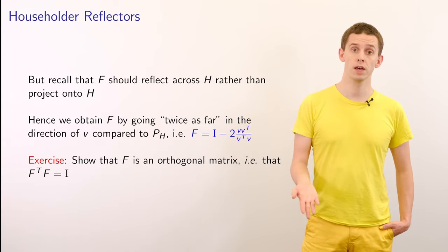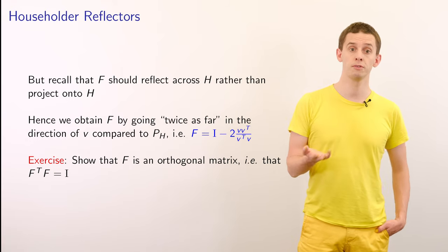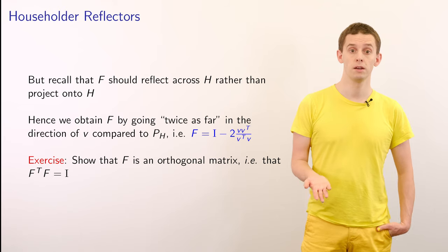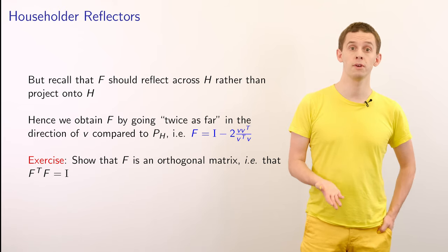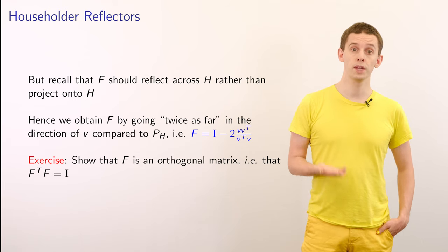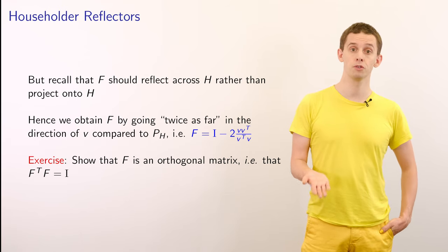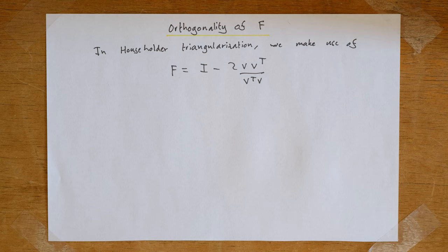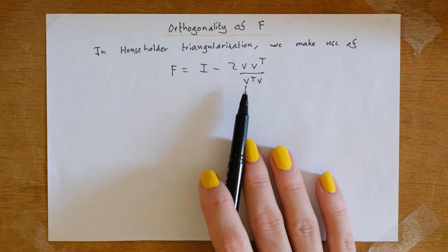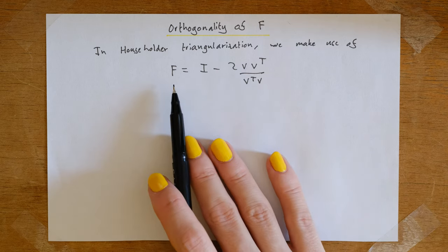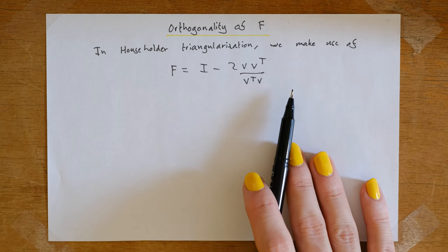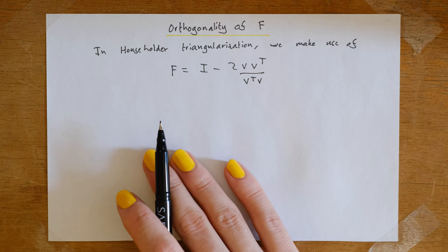Recall that our matrix F must reflect across the subspace H rather than merely project onto it. We obtain F by going twice as far in the direction of V compared to P_H, giving F equal to I minus 2 V V^T over V^T V. We now use the Householder triangularization matrix F defined as I minus 2 V V^T / V^T V, where V is a vector. This F represents a linear transformation that is a reflection in the plane normal to V. We will now verify that this matrix F is orthogonal.